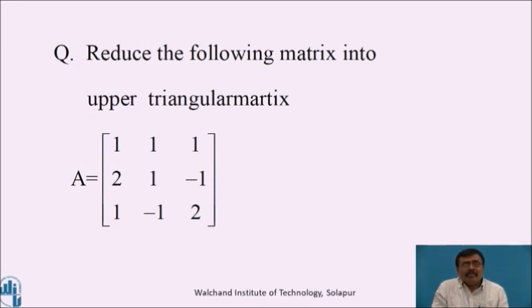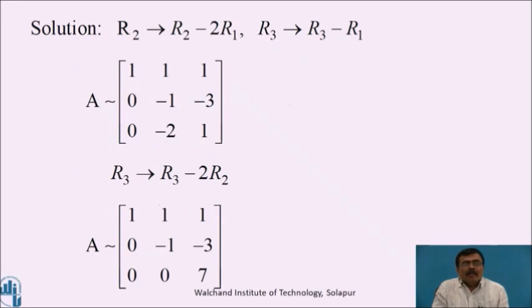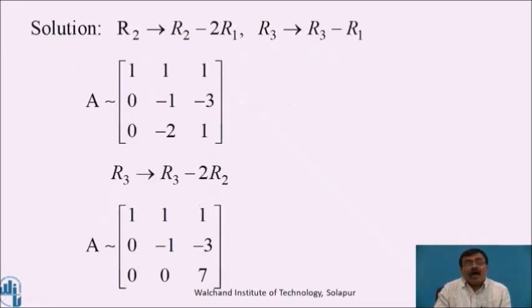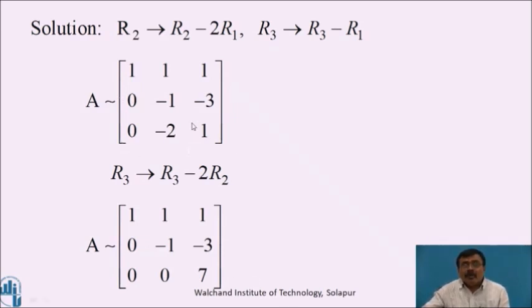First, reduce the following matrix into upper triangular form. Upper triangular means making the elements below the diagonals zero. Applying row transformations: r2 equals r2 minus 2 times r1, r3 equals r3 minus r1. Write the first row as it is. Then to make remaining elements zero, apply r3 equals r3 minus 2 times r2. The matrix A becomes equivalent to: 1, 1, 1; 0, minus1, minus3; 0, 0, 7, which is an upper triangular matrix.